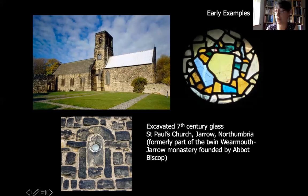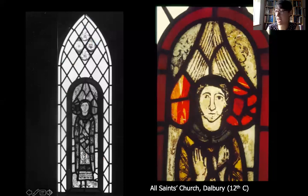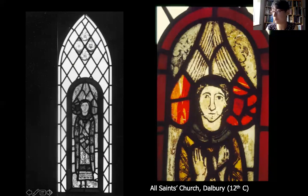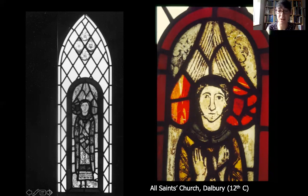Most surviving medieval glass is actually in England and Wales - there's barely any in Scotland and Ireland. There's hardly anything in England that was made there predating the late 12th century. One of the earliest examples of painted stained glass in situ is in the parish church of All Saints in Dalbury, Derbyshire. The painted details reveal the features of the face of Archangel Michael, and also lines indicating wings folded above his head and drapery lines on his cloak below. This is thought to be one of the earliest stained glass windows to survive in its original situation.